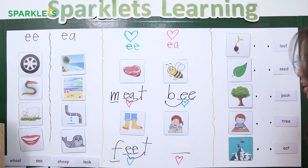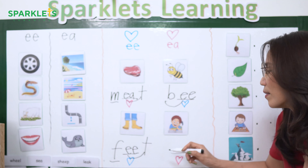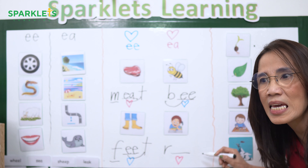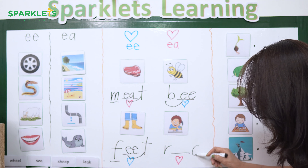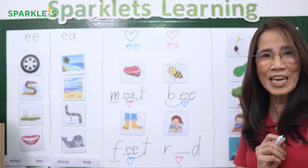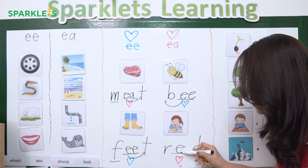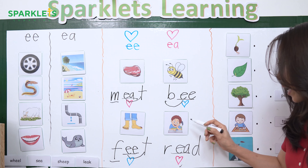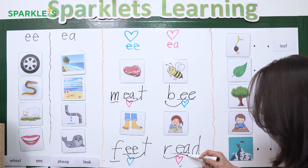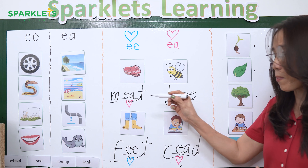And what is this? Read. Yes, read. What is the beginning sound? R. And what is the final sound? D. It's a red heart — what is it, EE or EA? EA. Yes, correct, it's EA. So that's the spelling of read. Let us read it again — R-EA-D — read. So you should remember the spelling.